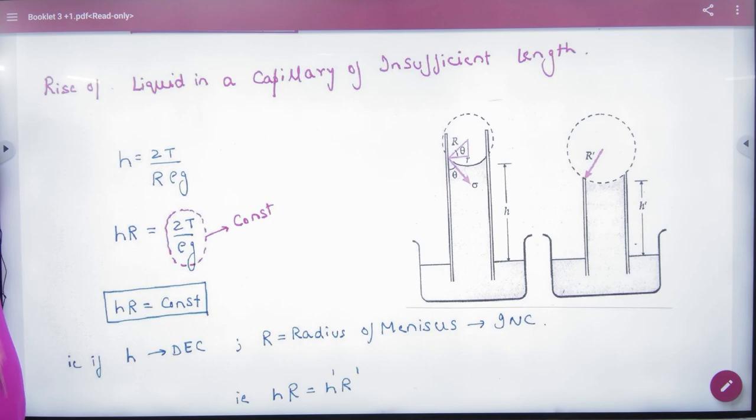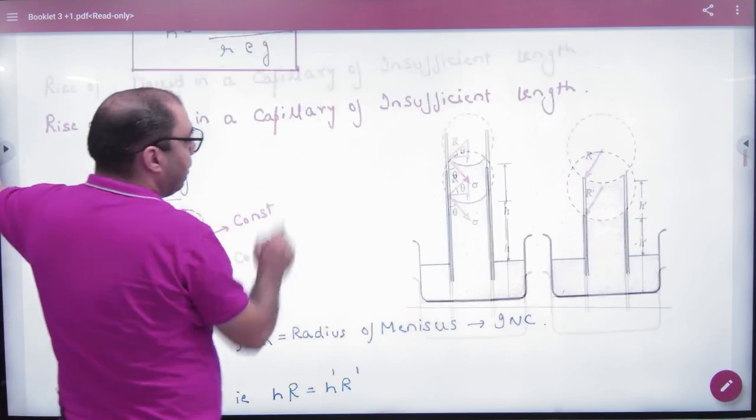For any liquid, 2T, surface tension, rho g is a constant. So h into R is a constant. The radius is a meniscus. If you have reduced height h dash, then what will be? R can be increased. Then the radius will increase. So the radius of the meniscus is increased. If the radius is increased by the meniscus, then tell us what you will ask.